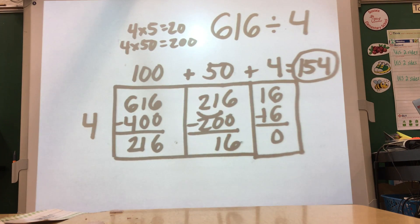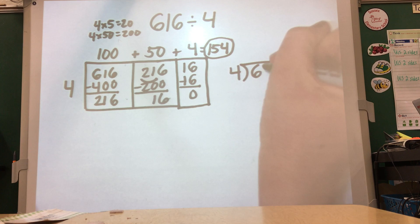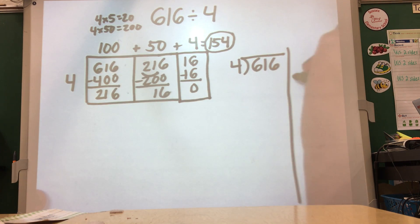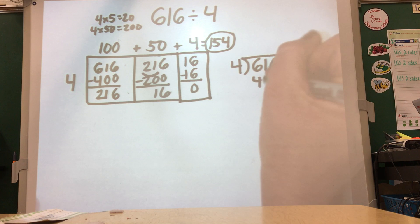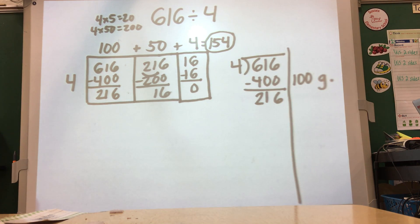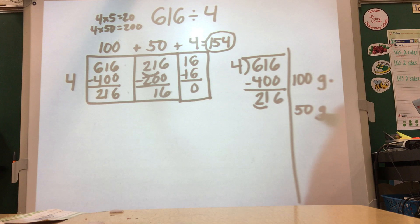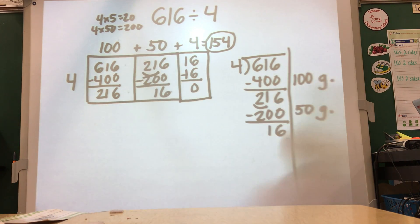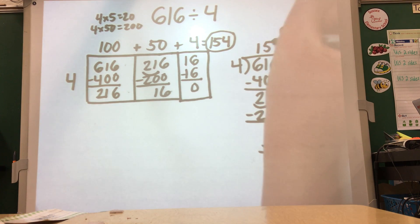I'm going to do the same problem using partial quotients so you can see the connection — a lot of students do prefer partial quotients. So I set up 616 divided by four and draw a line to keep my groups of four separate. I know if I take out 100 groups of four, four times 100 is 400, leaving 216. Again, I think what fours fact is closest to 216 without going over — four times 50 is 200, which is pretty close. Now I have 16 left, four times four gives me 16, and I'm down to zero. I still get 154 groups of four as my answer.